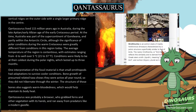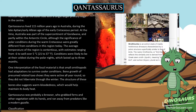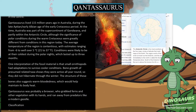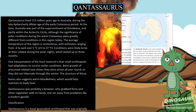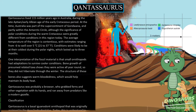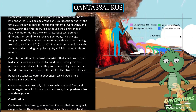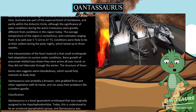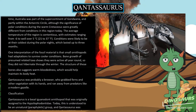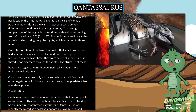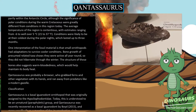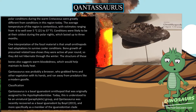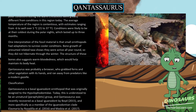One interpretation of the fossil material is that small ornithopods had adaptations to survive cooler conditions. Bone growth of presumed related taxa shows they were active all year round, so they did not hibernate through the winter. The structure of these bones also suggests warm-bloodedness, which would help maintain body heat. Qantasaurus was probably a browser who grabbed ferns and other vegetation with its hands, and ran away from predators like a modern gazelle.